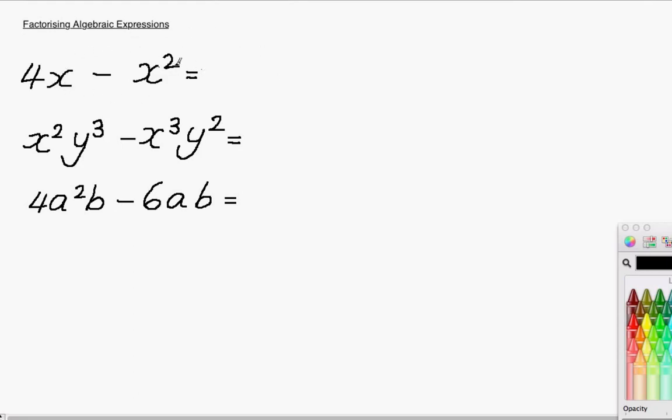In the first example, we've got 4x subtract x squared. You need to be able to write this in a factorised form. The first thing we're going to do is rewrite this expression in a simpler form. When I mean simpler, I mean a form that anyone can understand. We can understand what the x squared means and we understand what the 4x means.